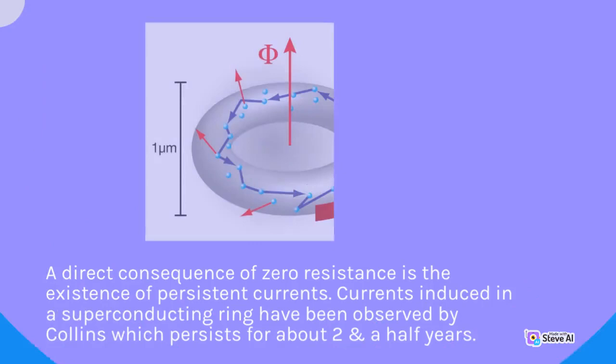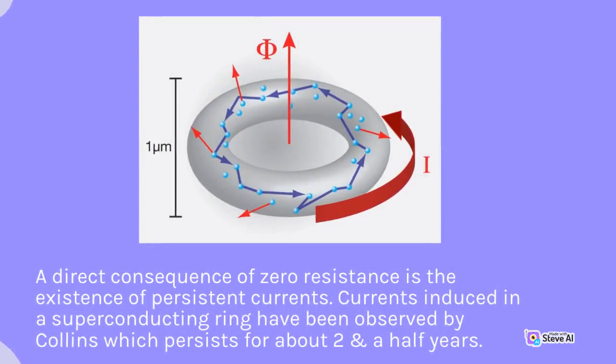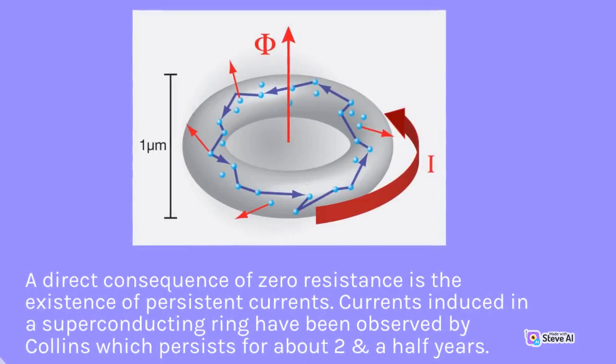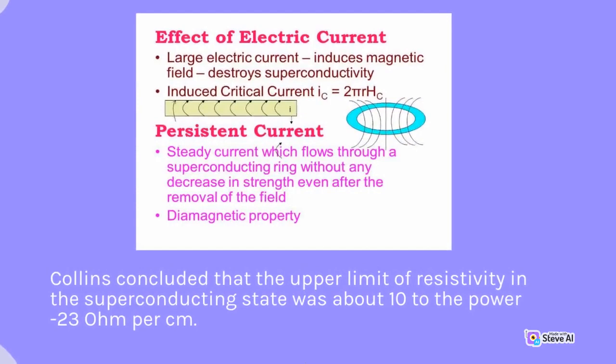A direct consequence of zero resistance is the existence of persistent currents. Currents induced in a superconducting ring have been observed by Collins, which persisted for about two and a half years. Collins concluded that the upper limit of resistivity in the superconducting state was about 10 to the power of minus 23 ohm per centimeter.